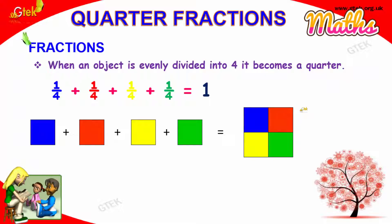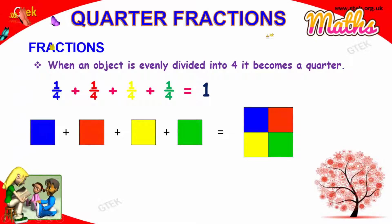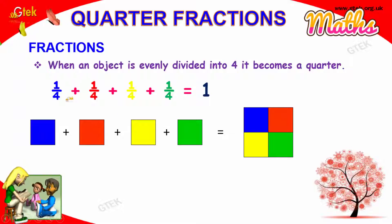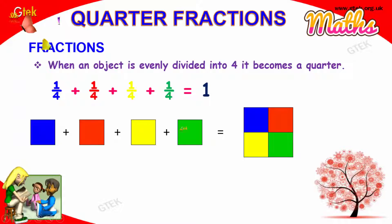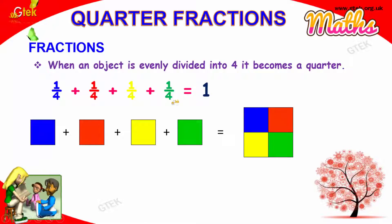When an object is evenly divided into four, it becomes a quarter — one by four, one by four, one by four, one by four — it becomes a full one. So, one by four is a quarter.